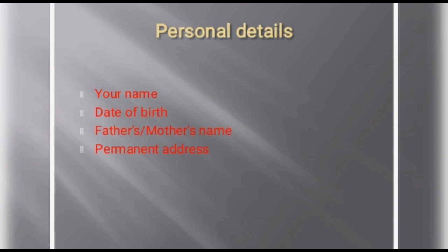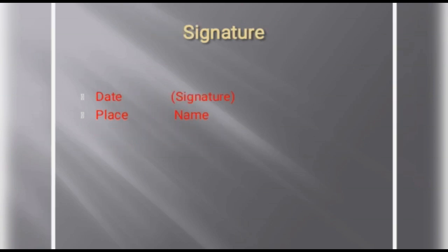Personal details include your full name, exact date of birth (date, month, year), father's or mother's name as per your case. If the address is already in the header, you don't need to repeat it in personal details. For the signature section, the date occupies the left-hand side at the bottom, tab-separated from the signature of the candidate, with the name placed symmetrically below the signature.